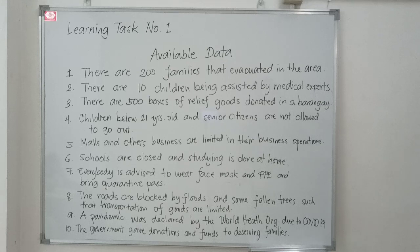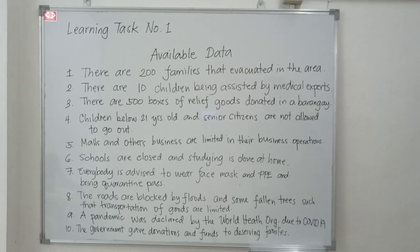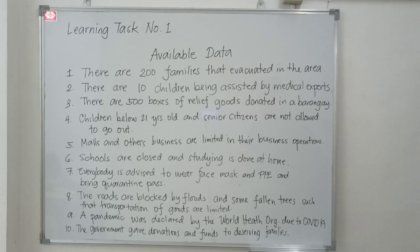Number seven: everybody is advised to wear face masks and PPEs and bring a quarantine pass. Number eight: the roads are blocked by floods and some fall in places such that transportation of goods is limited. Number nine: a pandemic was declared by the World Health Organization due to COVID-19.